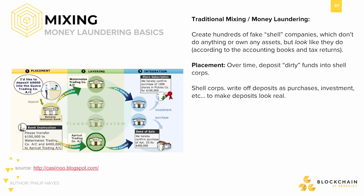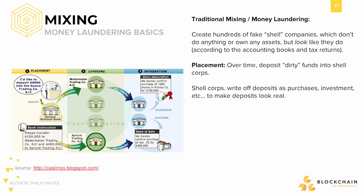The first step to money laundering is placement. Over time, the dirty funds — or funds obtained through illicit means — are placed into the shell companies. The shell corporations write off the deposits as purchases, investments, services provided, etc., in order to make the appearance of legitimate money entering the business through legitimate means. The next step is layering, where shell companies further pass their money through other shell companies to further complicate the financial supply chain and hide the true origin of the money. This step of the process is what mixing will simulate.